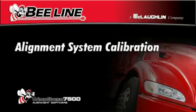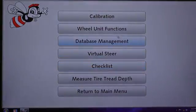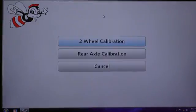Alignment System Calibration. To calibrate your system, click the Functions button in your main menu, then click Calibration. Now click on Two-Wheel Calibration.